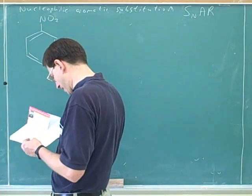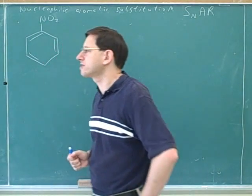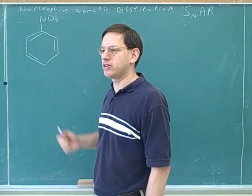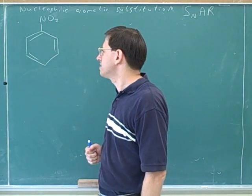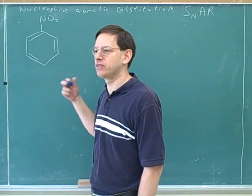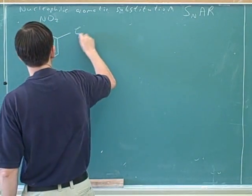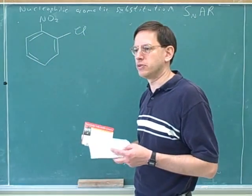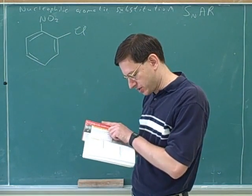What else do we need for the nucleophilic aromatic substitution? Obviously we need a leaving group. You can't do a substitution without a leaving group. And where can I put the leaving group? I need to put it in the ortho or the para positions, because those are the only ones that are activated. For example, this would be a good molecule for doing a nucleophilic aromatic substitution.